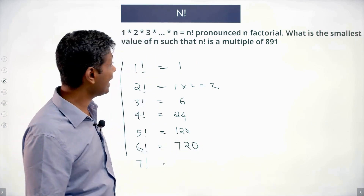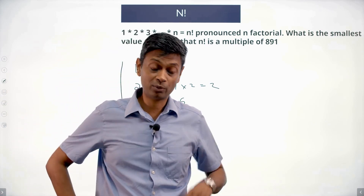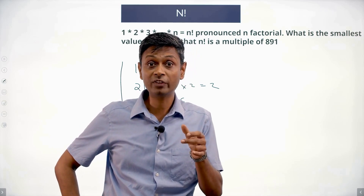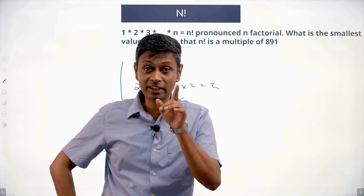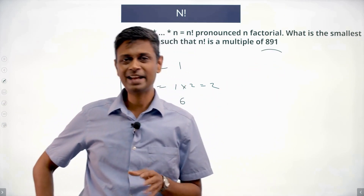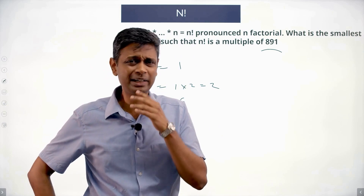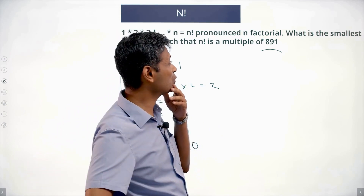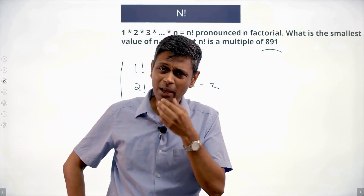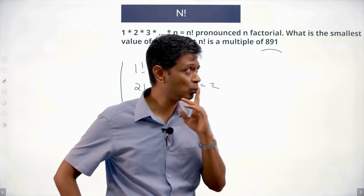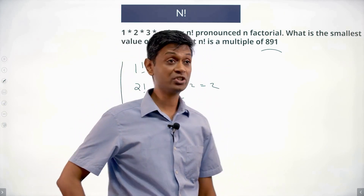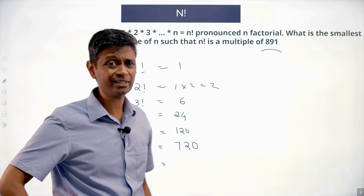I can also say 891 factorial — that is 1 into 2 into 3 into 4 into 5 into 6 into 7 into 8 into 9 all the way till 891 — will definitely be a multiple of 891. So 891 works, but it may not be the smallest value of n. Maybe some smaller factorial also works, and I can get to 891.